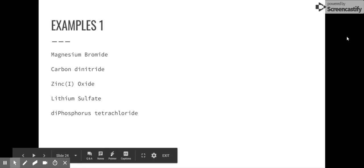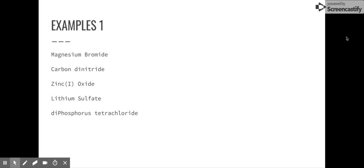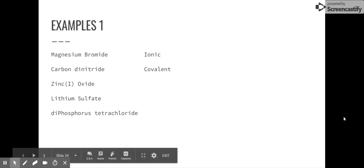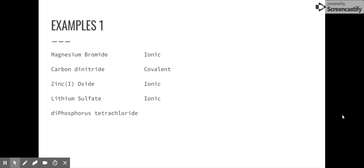So let's give you some examples. So we need to be able to go from a name to a formula. So the first question we're going to ask for all of these are, are they ionic or covalent? Magnesium bromide. Magnesium is a metal. That's a dead giveaway that that's an ionic compound. Carbon dinitride, that's covalent. Now, besides it saying di there in the name, more importantly, these are two nonmetals. Zinc one oxide is ionic. Lithium sulfate is also ionic. Diphosphorus tetrachloride, those are covalent. And again, the biggest difference, metals and nonmetals versus all nonmetals. That's how we tell the difference.